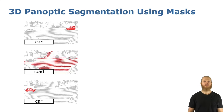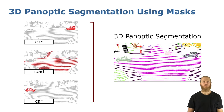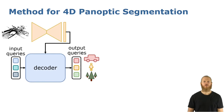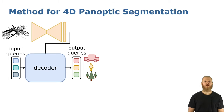We formulate 3D panoptic segmentation as a prediction of a set of masks and semantic classes, which we combine in the final panoptic segmentation. In our approach, we first segment the first scan using an encoder-decoder to set features and learnable queries as mask proposals. These queries are refined in a transformer decoder, and after this refinement we obtain for each query a binary mask and semantic class.